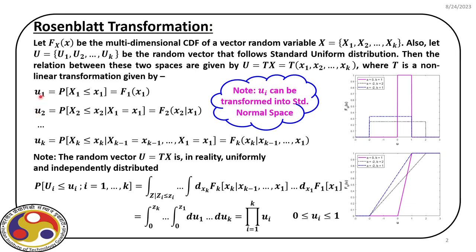For U2, note carefully that it is capital F2 of X2 given X1. That means we have first estimated X1 and U1, so we have anchored X1 at that value, and when we go to the second variable we use conditional distribution to find U2. Similarly, the last one UK will be capital F of K of Xk given X1 up to Xk minus 1.